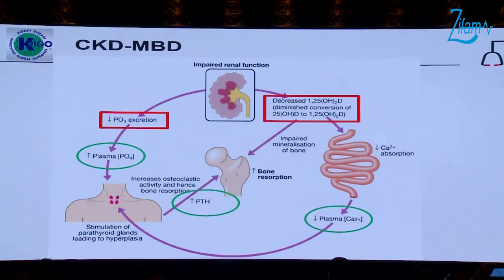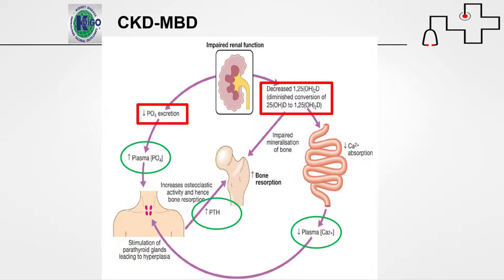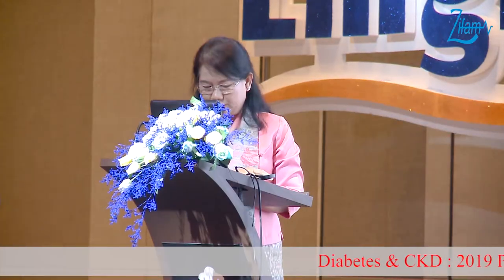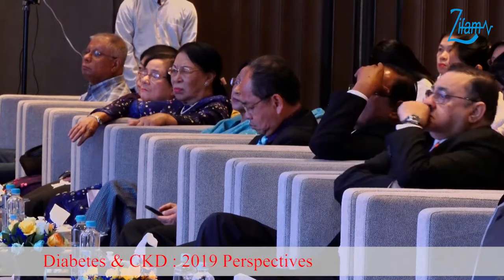The third point on delaying CKD progression is CKD-MBD. When a patient has chronic kidney disease, because of hyperparathyroidism, they develop metabolic bone disease. Metabolic bone disease is important to correct because the resulting hyperphosphatemia leads to atherosclerosis, which can cause cardiovascular events, morbidity, and mortality. Cardiovascular morbidity and mortality is an important cause of death in early-stage CKD.